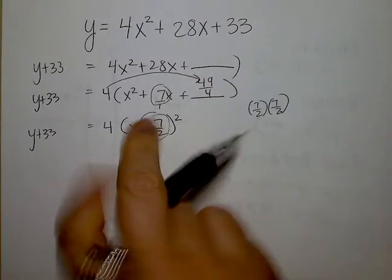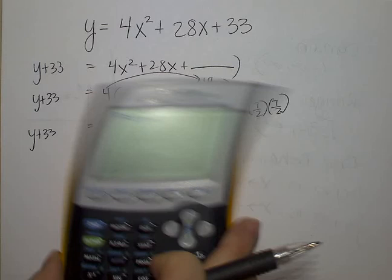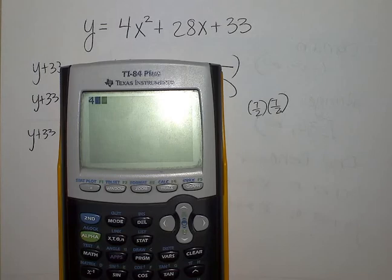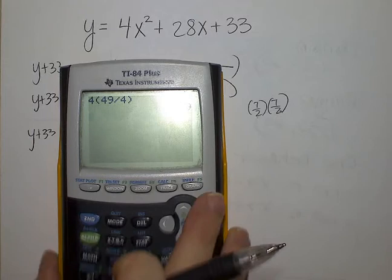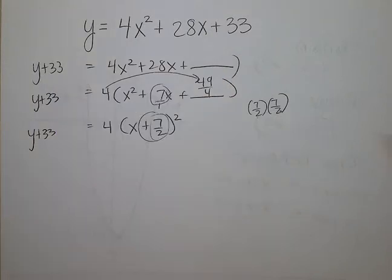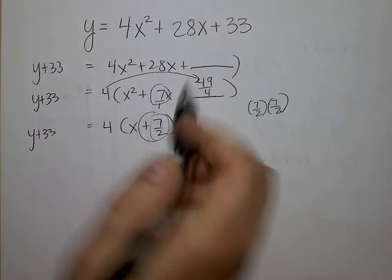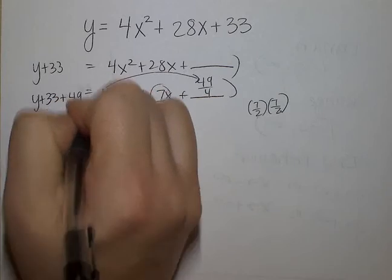So actually, I did not just attach 49 over 4. I attached 4 times 49 divided by 4 is actually 49. So I just attached 49 to the right-hand side, a positive. So I need to do a positive 49 to the left-hand side.